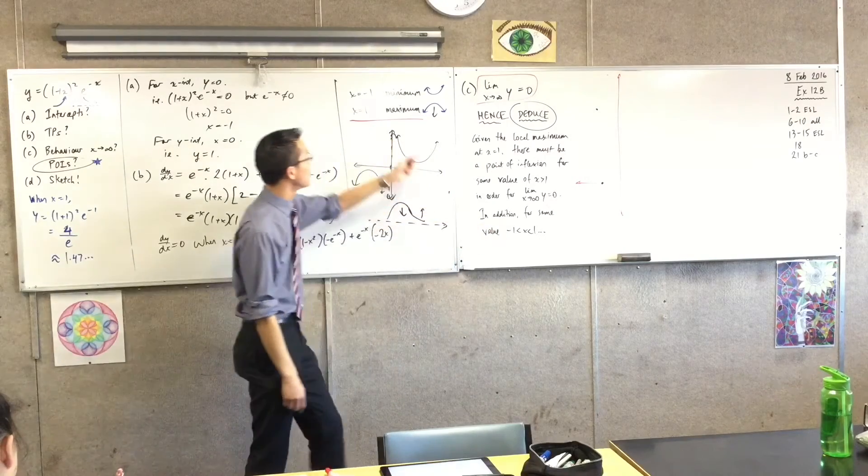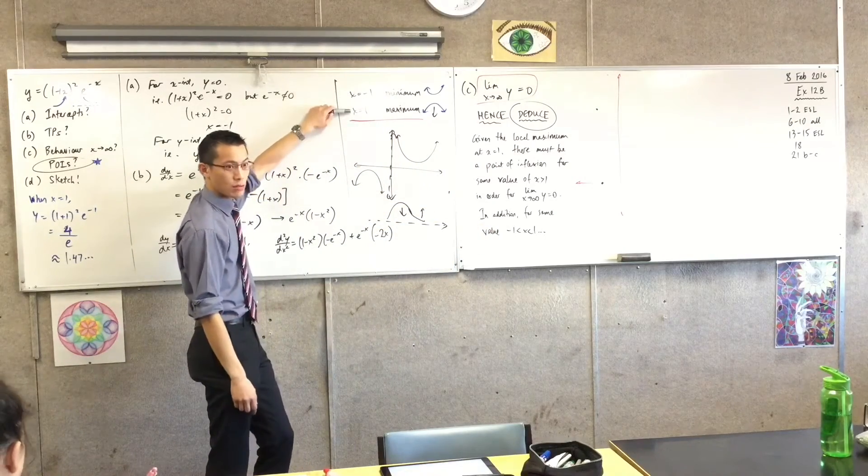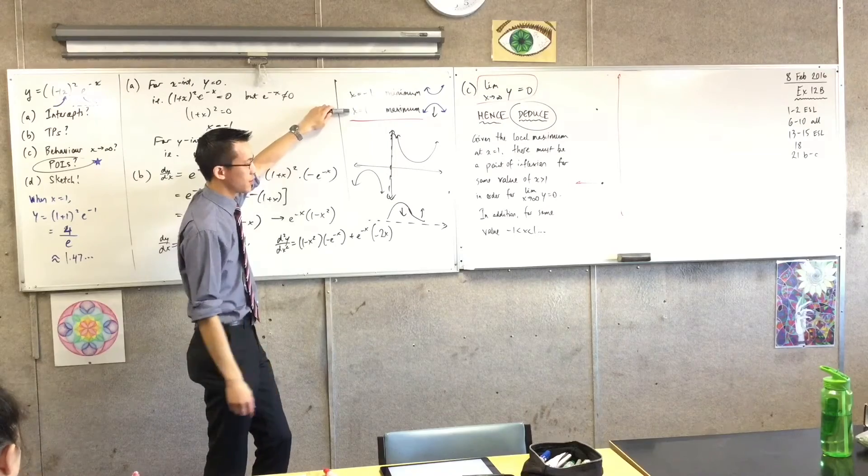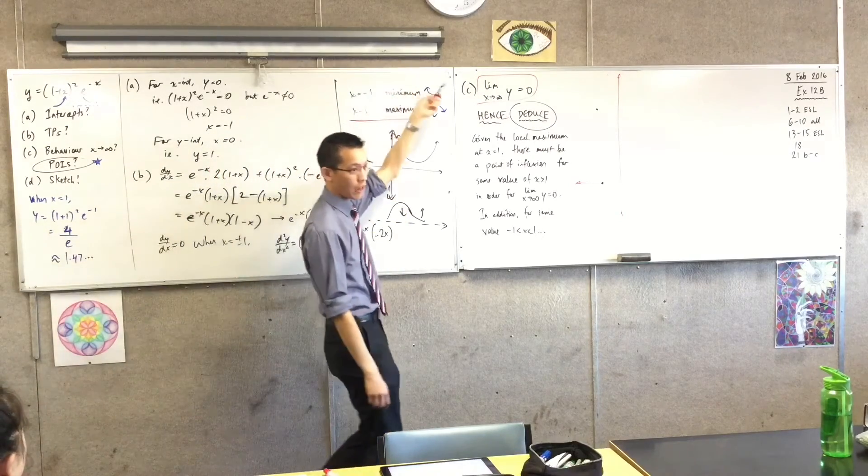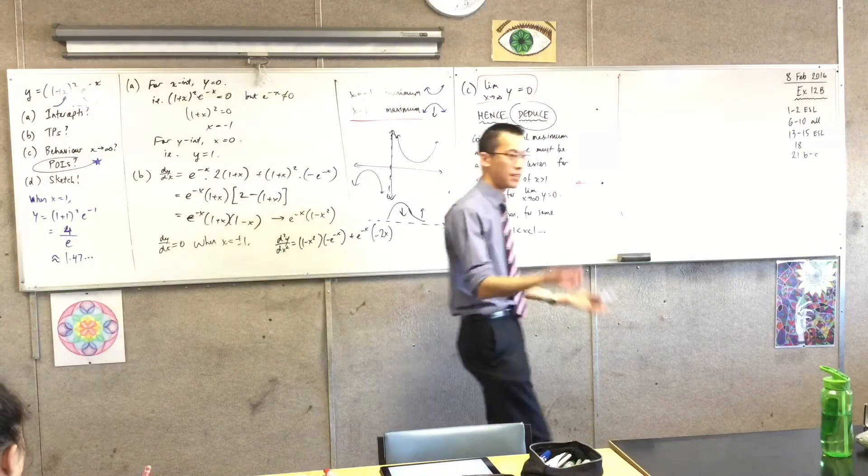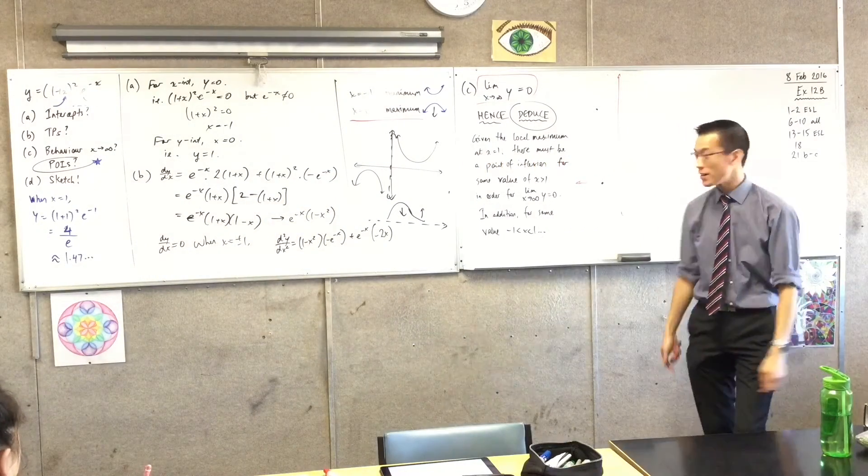So there's the first point of inflection, or the second depending on your order. In addition, for some value between these two, there must also be a change in concavity because the curve is continuous and there's a concave up point, concave down. Okay? And that's it. These are two inflections. Now we're ready to draw this thing.